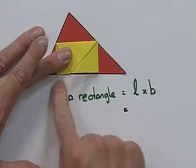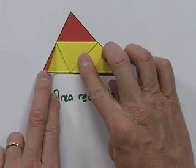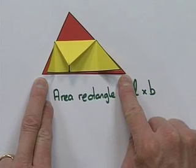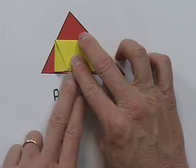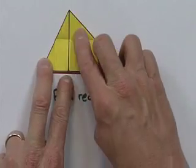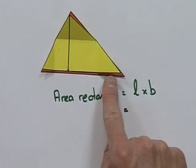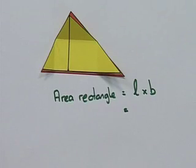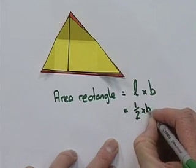But what is the length of that rectangle? Well, the length of that rectangle, this side here, is one half this side of the triangle. Think about that. That part has been folded in half, and that part has been folded in half. Now, in terms of our triangle, we refer to this side of the triangle, which lies at the bottom of the altitude as the base of the triangle. So, that is one half of the base.